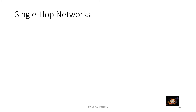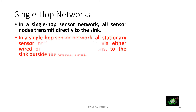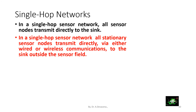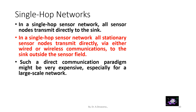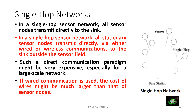Single-hop networks: in a single-hop sensor network, all sensor nodes transmit directly to the sink. Here is the representation of a single-hop network. In a single-hop sensor network, all stationary sensor nodes transmit directly via either wired or wireless communications to the sink outside the sensor field. Such a direct communication paradigm might be very expensive, especially for a large-scale network, as the cost of wires can be much larger than that of sensor nodes.